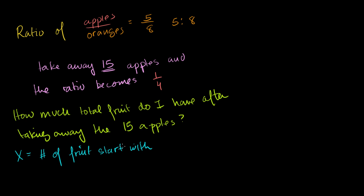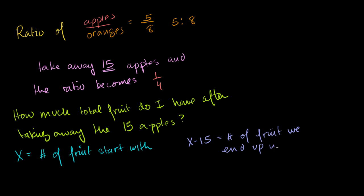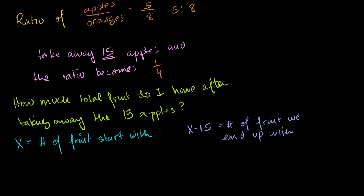How much fruit are we going to end up with at the end? We're taking away 15 apples — we're not doing anything to the oranges — so x minus 15 is equal to the number of fruit we end up with. We know that we start off with a ratio of 5 to 8, so the ratio of apples to oranges is 5 to 8.